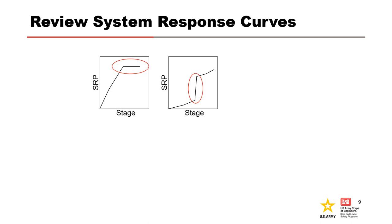In this example, the system response probability abruptly increases and then continues on the same initial trend. Is there a physical explanation for increasing the system response probability by an order of magnitude at pool of record, for example?